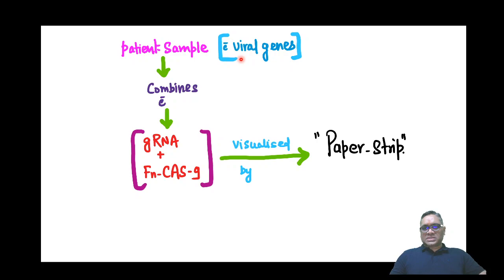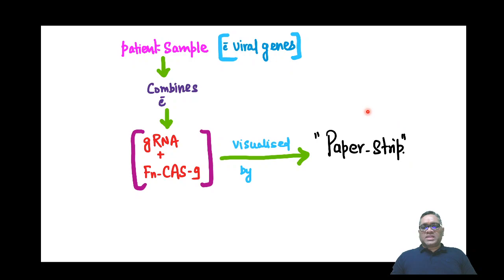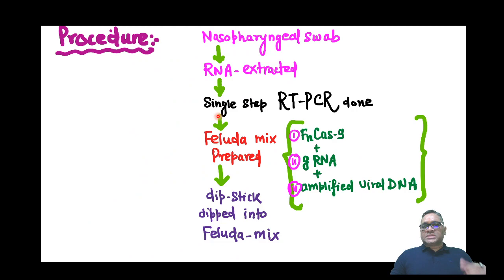The patient sample with viral genes will combine with the complex of guide RNA and FN-Cas9. That patient sample plus guide RNA–Cas9 complex will then be visualized by a thin paper strip, and that is how we are going to identify this viral genome.